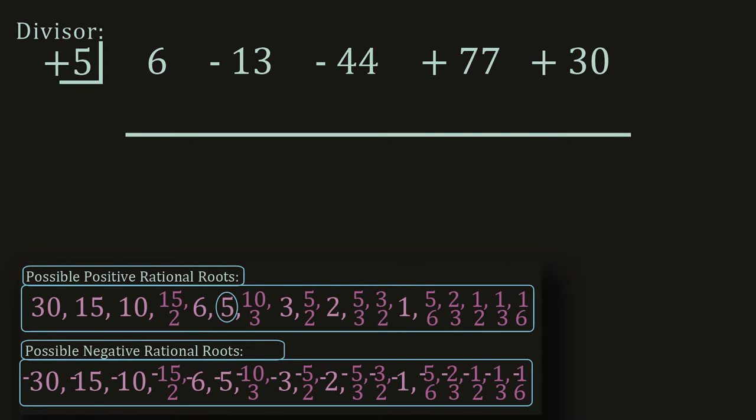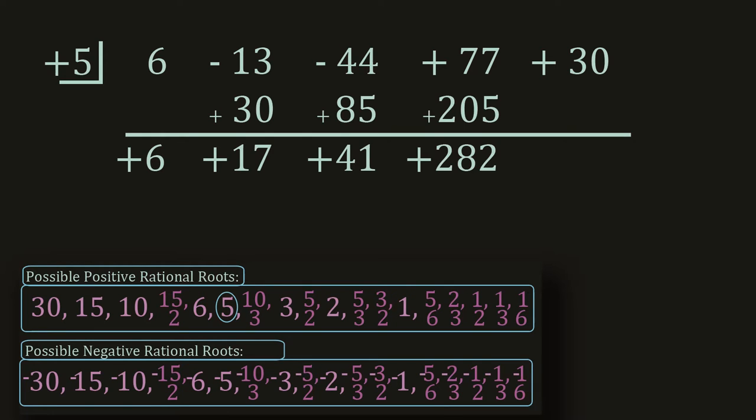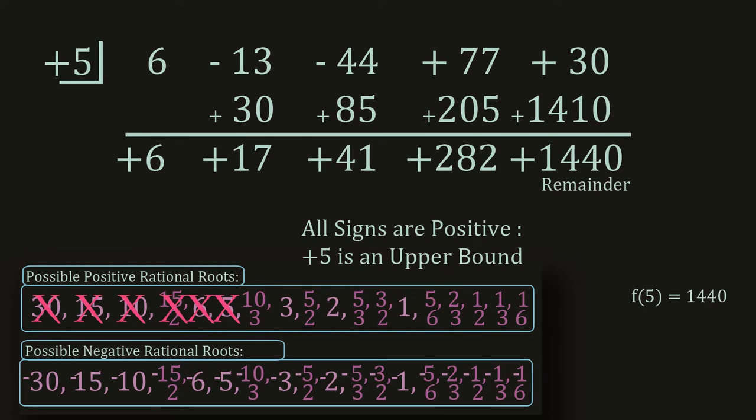When my divisor, that's the number up top, is positive and positive answers don't stop, I know that there won't be factors up higher, that divisor is an upper bound or greater once a lighter.